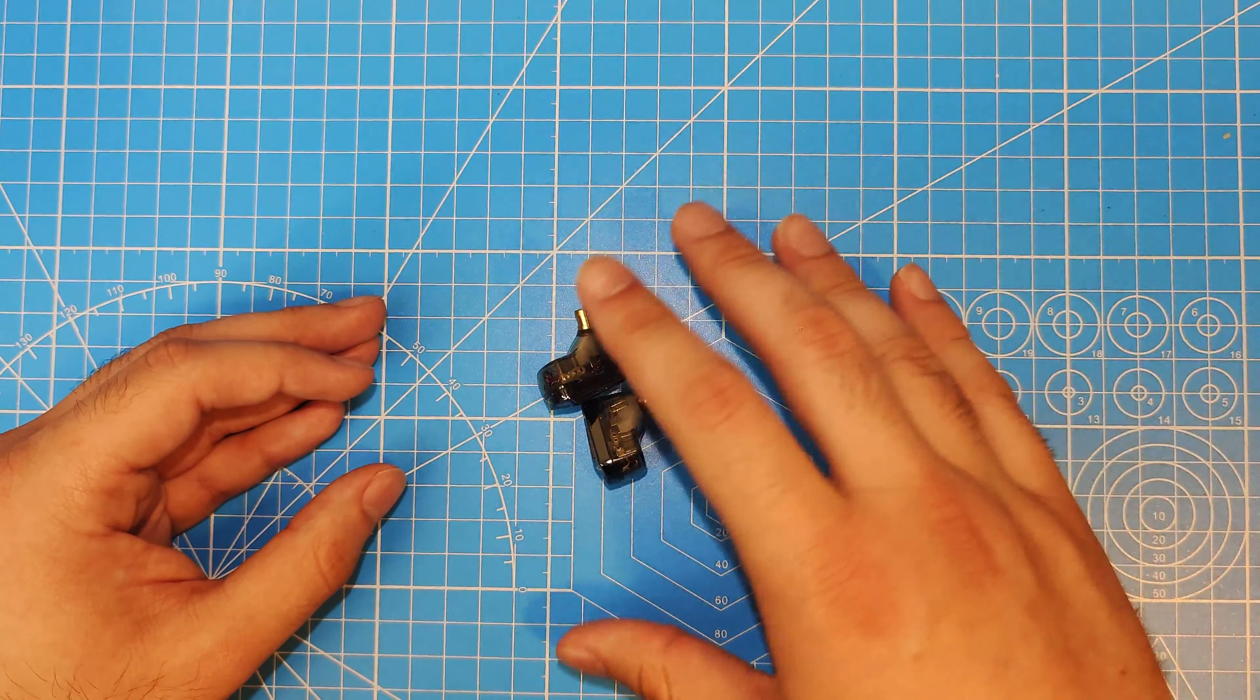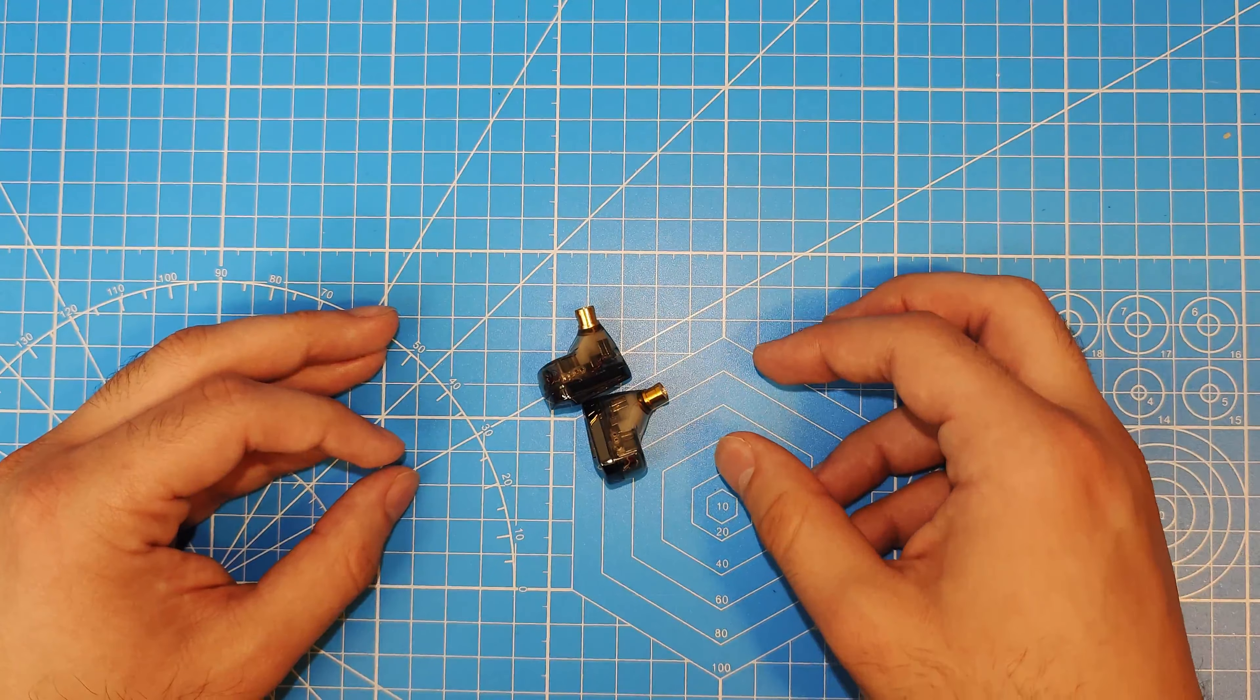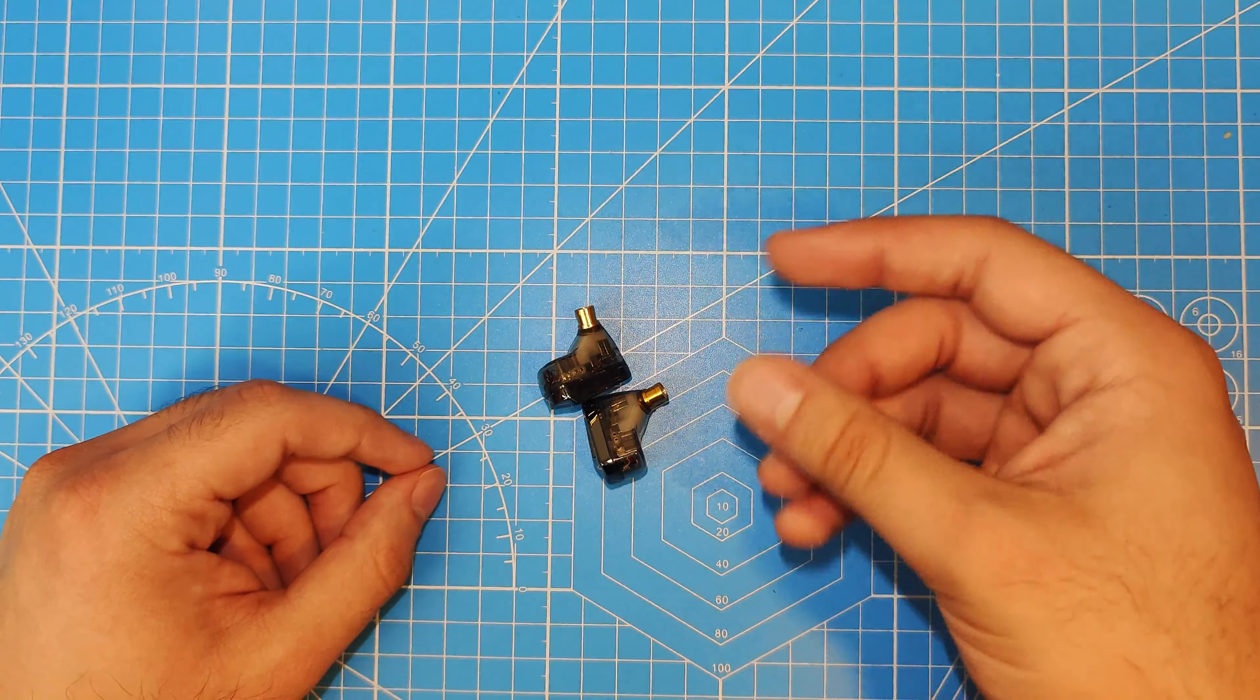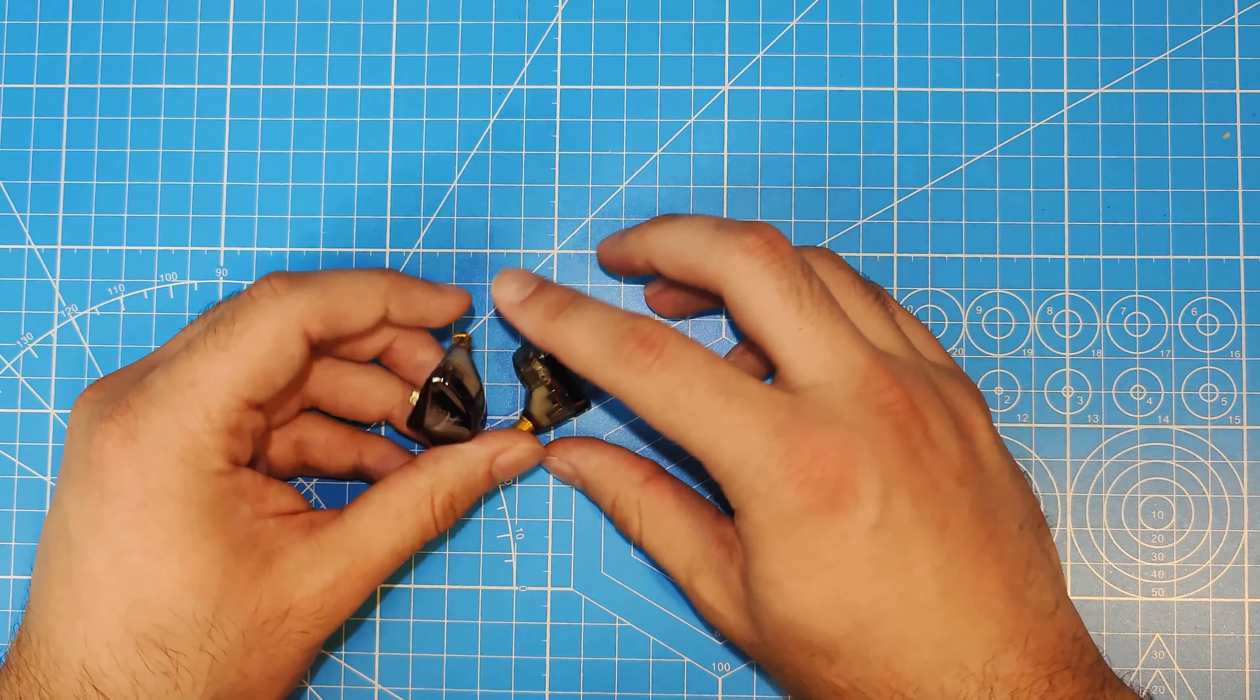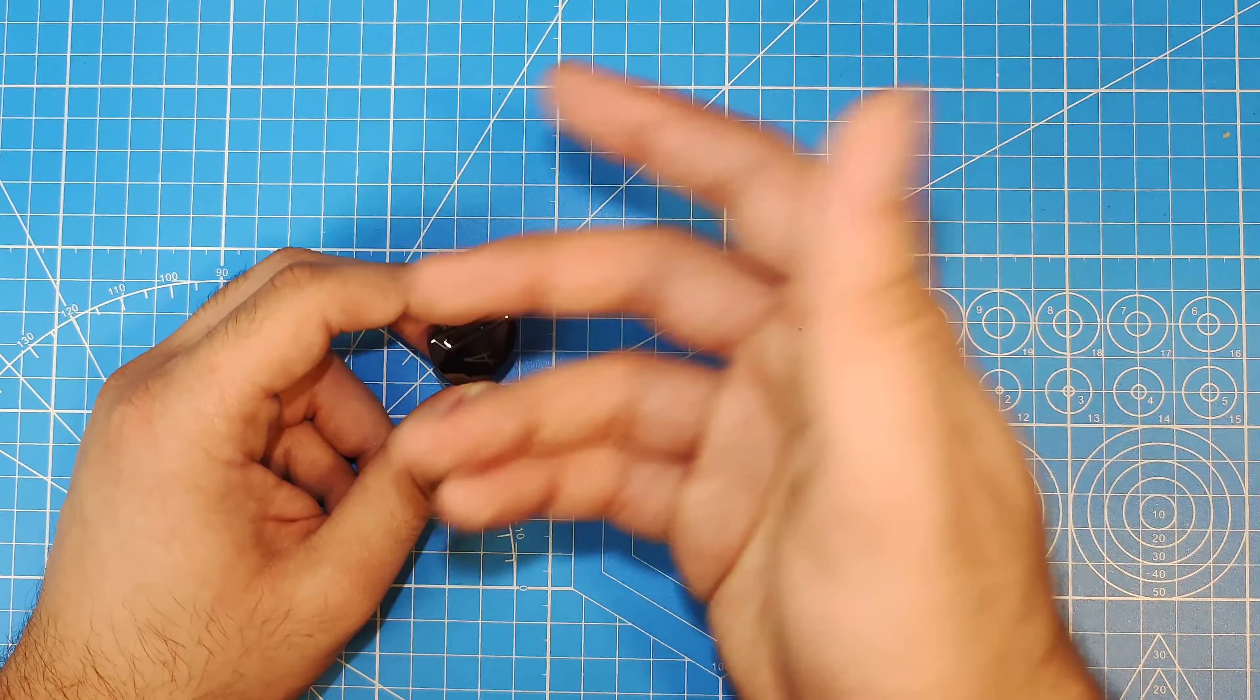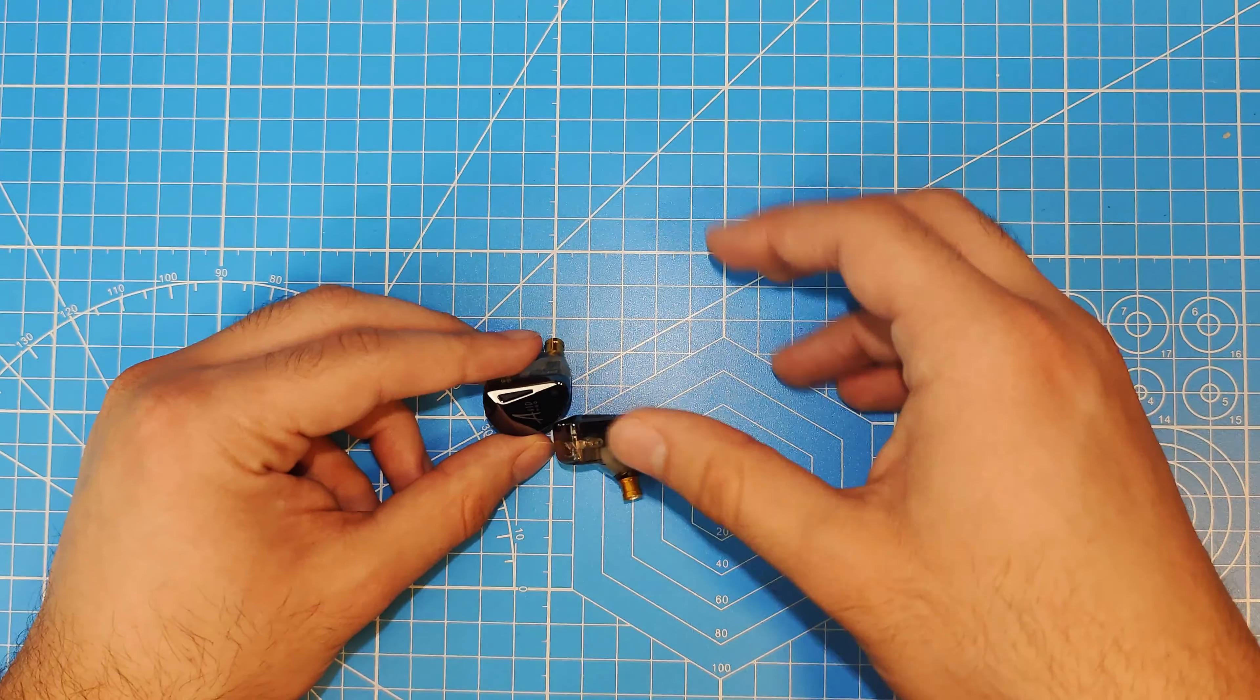The treble was where the set does its worst, honestly. It's very poor detail, yet too much extension, especially with the stock tips. Going to the spin fits, it has a more rounded off treble that sounds much nicer. It's still not detailed, though, especially for this price. So, really, the main redeeming quality of the set is its bass. The bass is very nice, actually, for the price range, especially for a BA bass. But, in general, the bass is very good at this price. But, the mid-range is not the greatest and the treble does have some struggles as well.